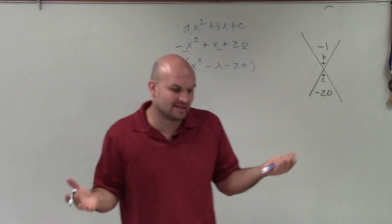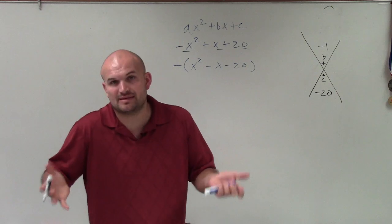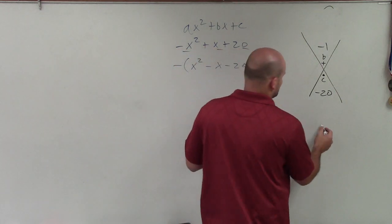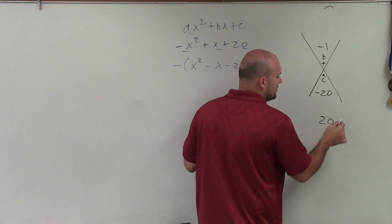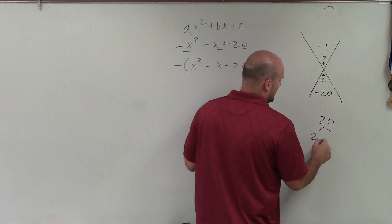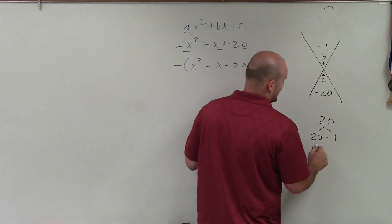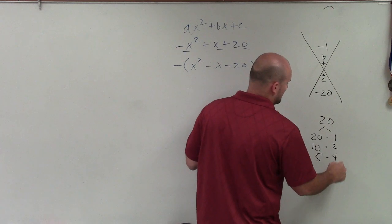So notice that when we're multiplying and getting negative 20, one of the factors has to be negative. So let's look at the factors for 20. Forget about the positive negatives for a second. I can do 20 times 1, I can do 10 times 2, and I could do 5 times 4.